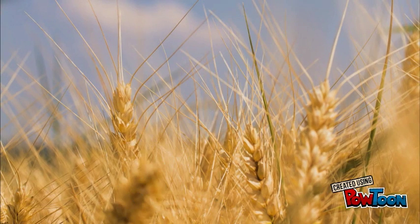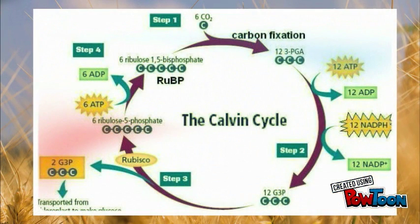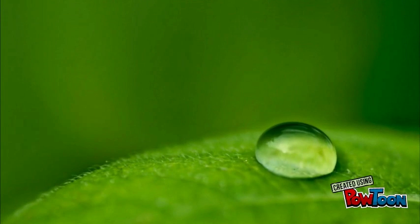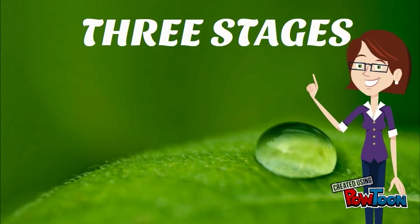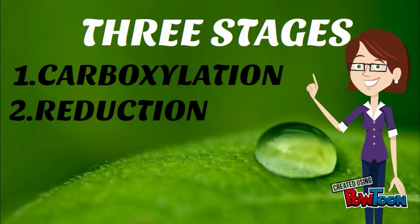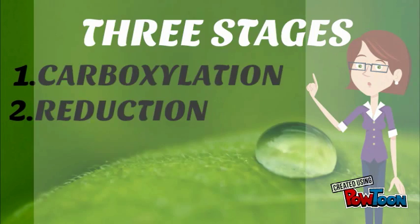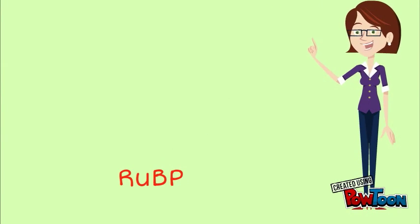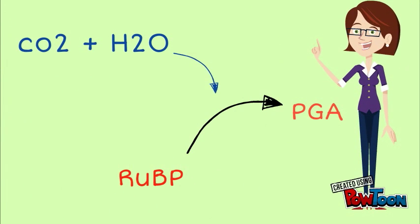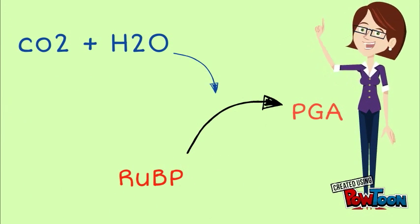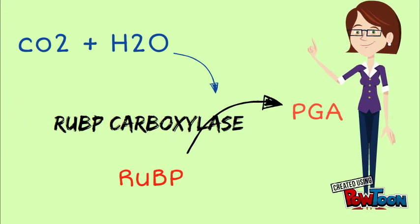The dark reaction is a cyclic process called the Calvin-Benson-Bassam cycle. There are three stages in this cycle: carboxylation, reduction, and regeneration. In carboxylation, RUBP converts into PGA using carbon dioxide and water. This reaction is induced by the RUBP carboxylase enzyme.